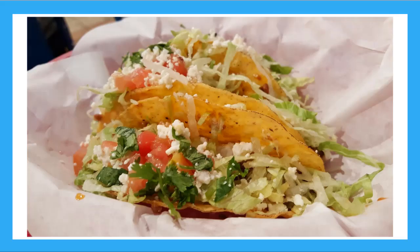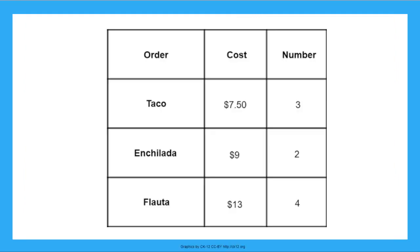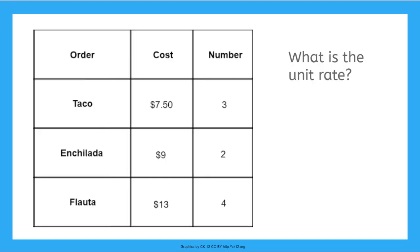I sure hope you like Mexican food because I'm taking you out to lunch. Take a look at the menu. The menu says the item, then the cost, and then how many of that item you get for that cost. I can't decide what I want — I think I want one of everything. How much will it cost me to order one taco, one enchilada, and one flauta? This is the same as asking: what is the unit rate for each item on the menu?